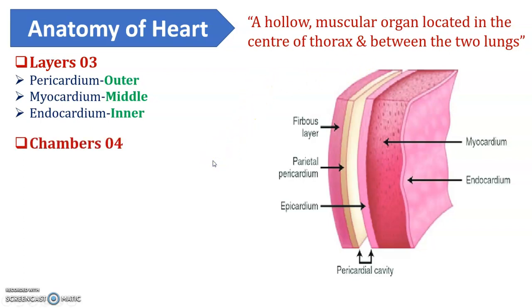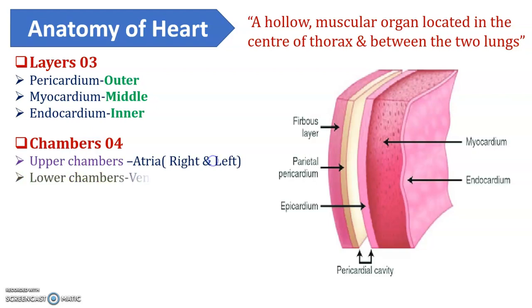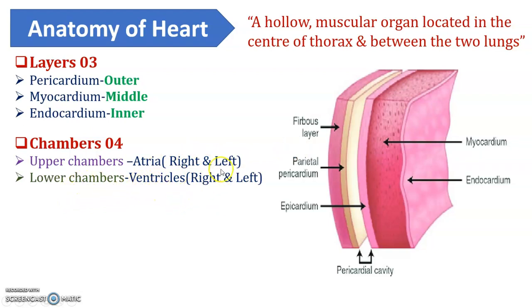There are four chambers in the heart. The upper chambers are the right atrium and left atrium. The lower chambers are the ventricles — right ventricle and left ventricle. Next, what are the walls present in the heart?